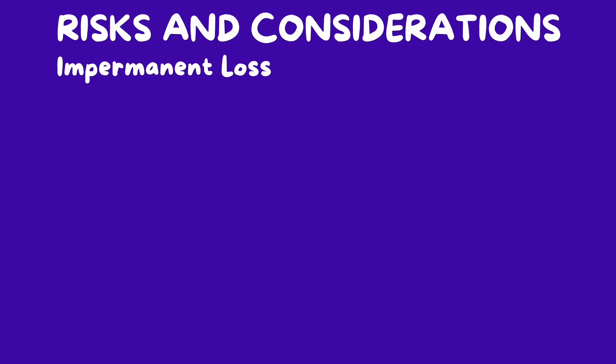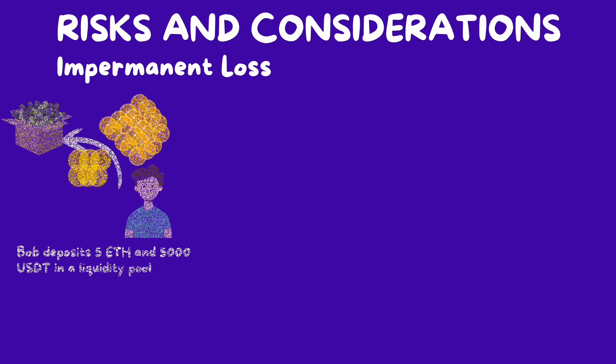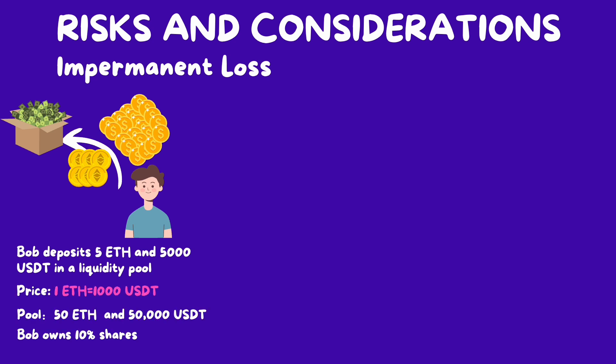Let's look at an example of impermanent loss. Bob deposits 5 ETH and 5,000 USDT in a liquidity pool. In this particular AMM, the deposited token pairs need to be equivalent, meaning the price of ETH is 1,000 USDT at the time of deposit. In addition, there is a total of 50 ETH and 50,000 USDT in the pool, funded by other liquidity providers just like Bob. So Bob has a 10% share of the pool.